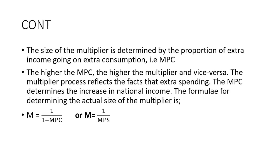The size of the multiplier is determined by the proportion of extra income going into extra consumption — the marginal propensity to consume. For example, before you receive twenty thousand as income, you spend fifteen thousand on consuming goods and services. If income changes and you receive thirty thousand, how much money will you spend additionally on consuming extra goods or services? The higher the marginal propensity to consume, the higher the multiplier, and vice versa. If consumption increases, it pushes the multiplier to increase, and vice versa.